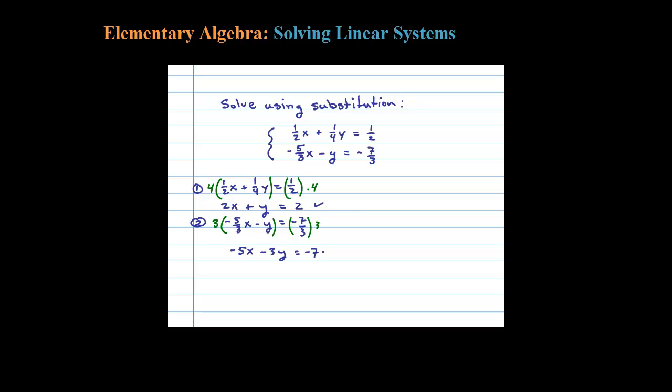So this gives me the equivalent system where the first equation is 2X + Y = 2, and the second equation is -5X - 3Y = -7. That looks more like one of the normal ones in the section.